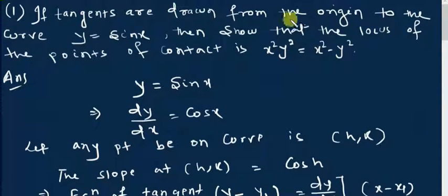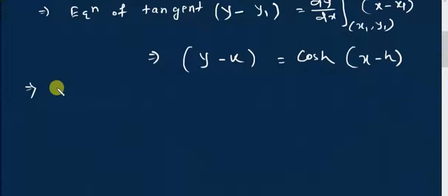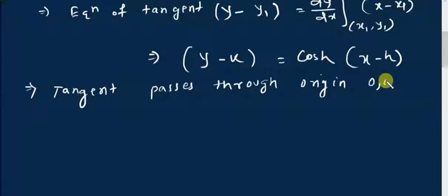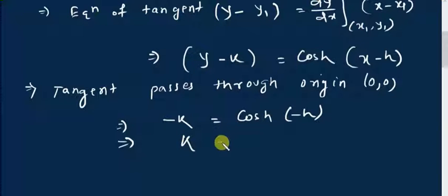The question states that the tangent is drawn from the origin, so the tangent passes through the origin (0, 0). That means (0, 0) must satisfy this equation. Substituting x = 0 and y = 0 gives: 0 - k = cos h · (0 - h), so -k = -h · cos h. Cancelling the minus signs: k = h · cos h.